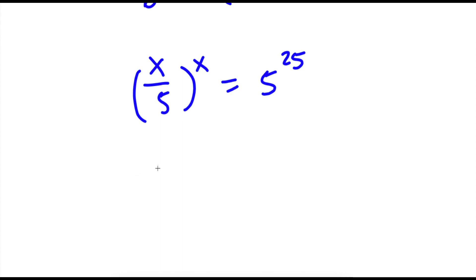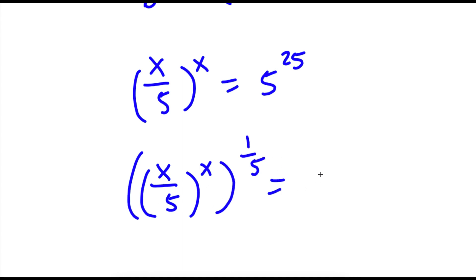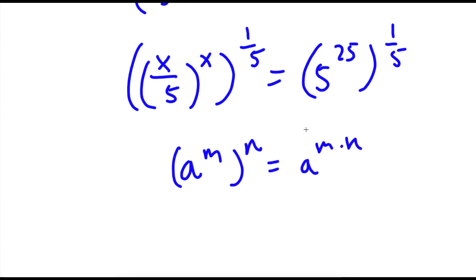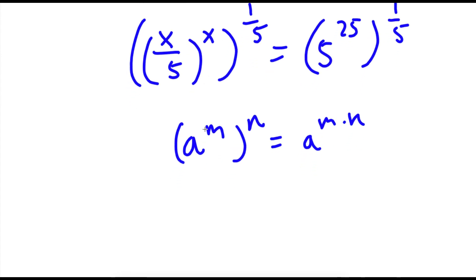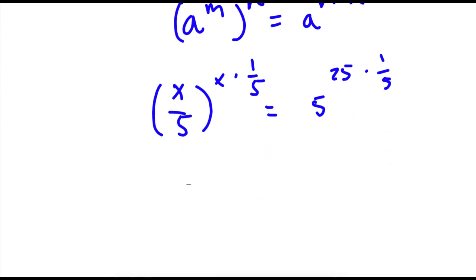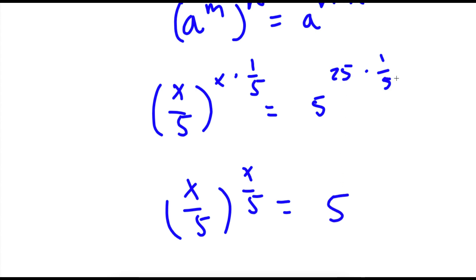Now, if I take the power of 1 over 5 on both sides, I get x over 5 to the power of x to the power of 1 over 5 is equal to 5 to the power of 25 to the power of 1 over 5. Now, if I have something in the form a to the power of m to the power of n, this is equal to a to the power of m times n. So x over 5 to the power of x times 1 over 5 — since x times 1 over 5 is simply x over 5 — I have x over 5 to the power of x over 5 is equal to 5, because 25 times 1 over 5 is simply 5.